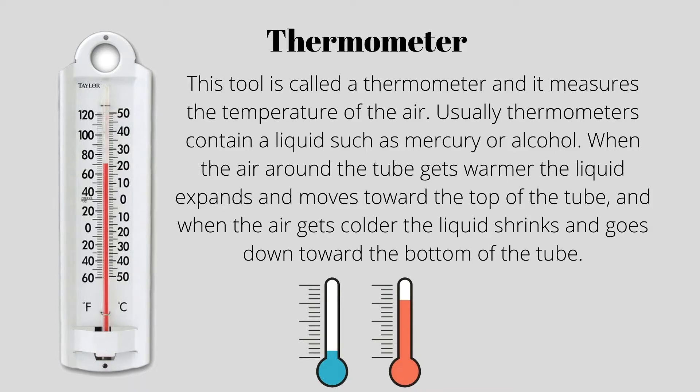This tool is called a thermometer, and it measures the temperature of the air. Usually, thermometers contain a liquid such as mercury or alcohol. When the air around the tube gets warmer, the liquid expands and moves towards the top of the tube. And when the air gets colder, the liquid shrinks and goes down to the bottom of the tube.